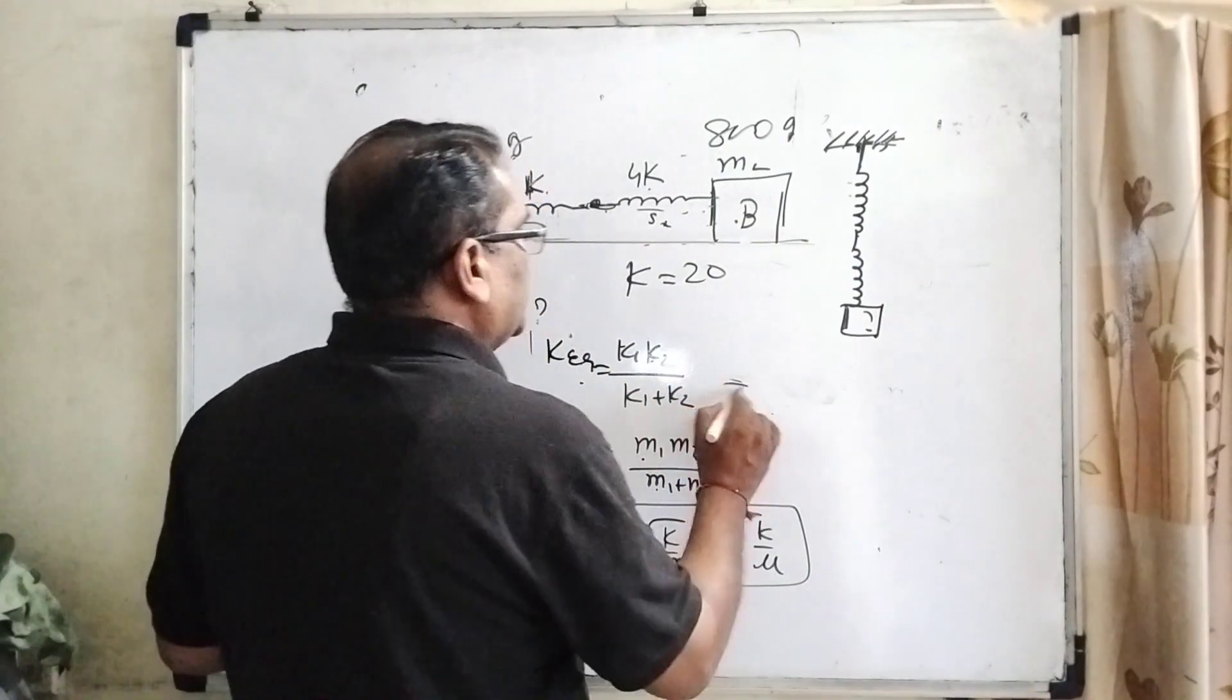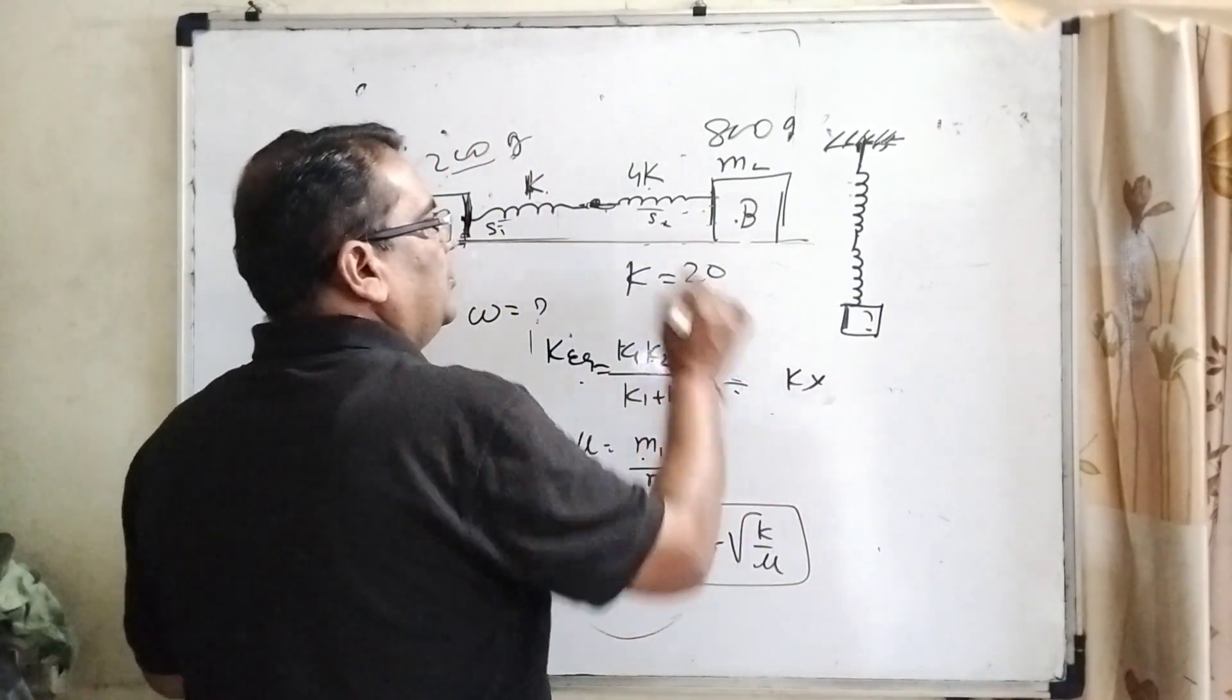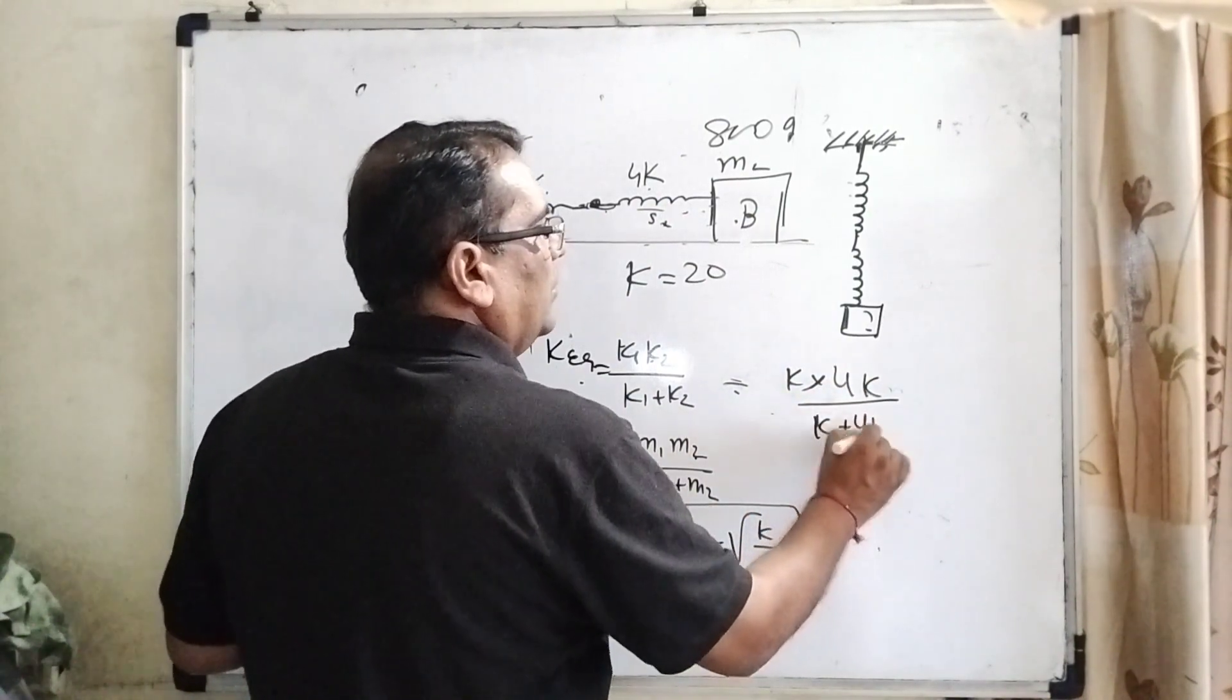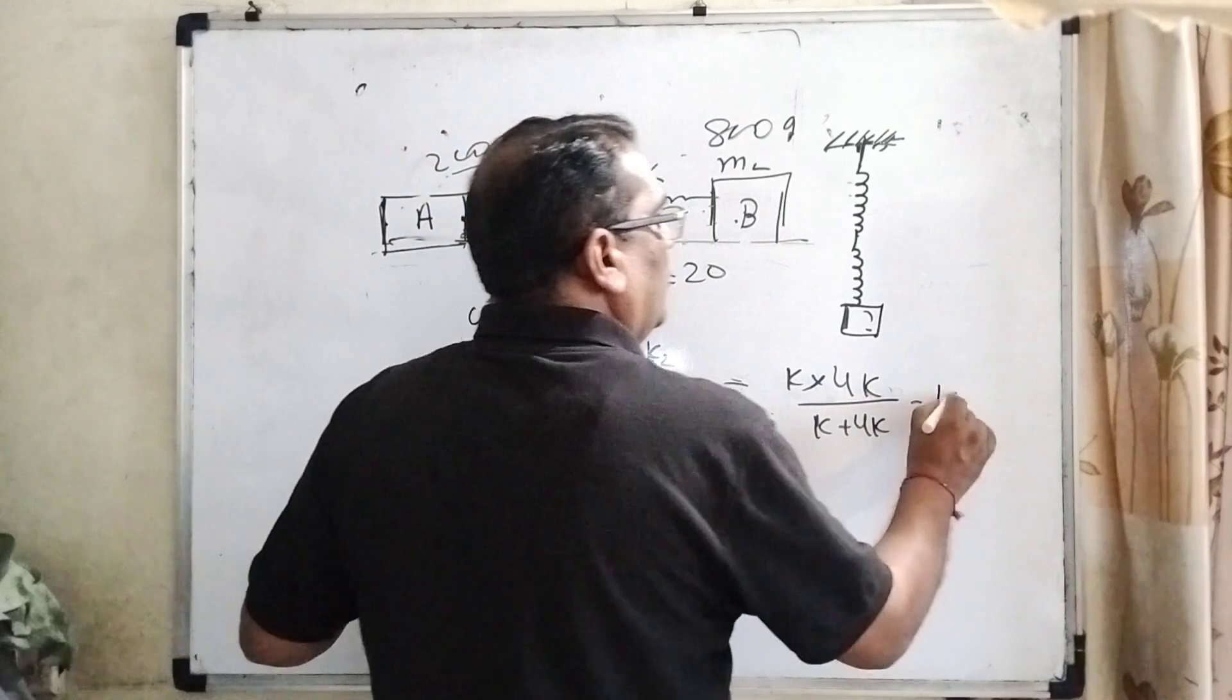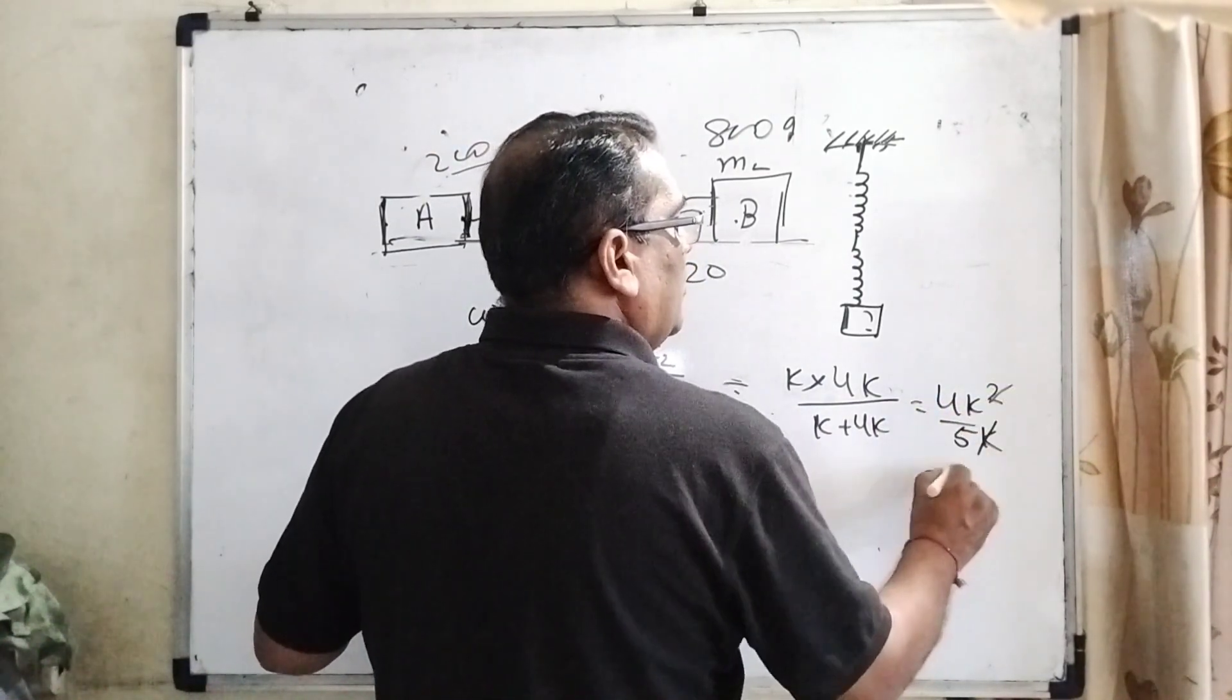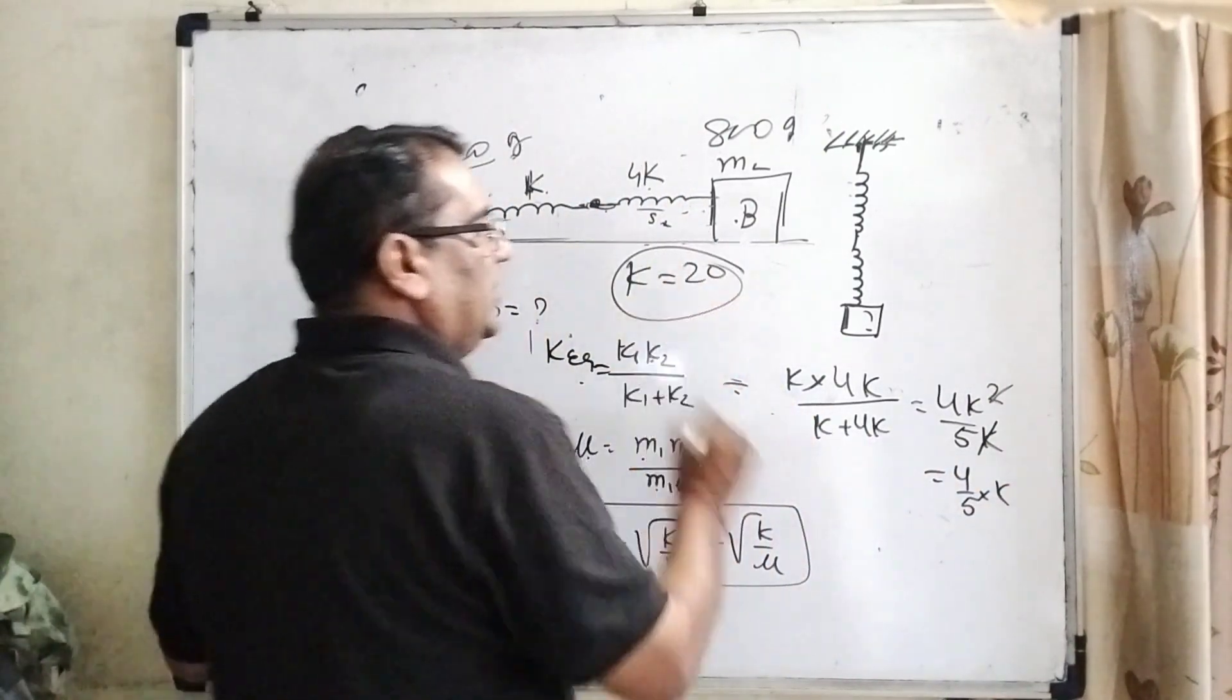Now first of all, we substitute the values. k1 is k, k2 is 4k. So k equivalent is k times 4k upon k plus 4k, which is 4k squared over 5k. k cancels out, giving 4 by 5k, and k is given as 20.